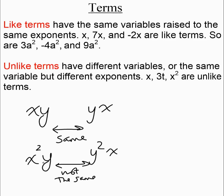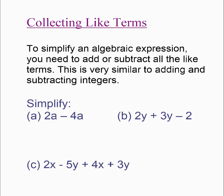Because in x squared y, the x is squared, and in y squared x, the y is squared. So just be careful of those types of things. For collecting like terms, what you want to do is put the things that are the same together. Remember, you can change the order of adding — 3 plus 2 is the same as 2 plus 3. In this first example, your terms are already collected, so you don't have to rearrange.